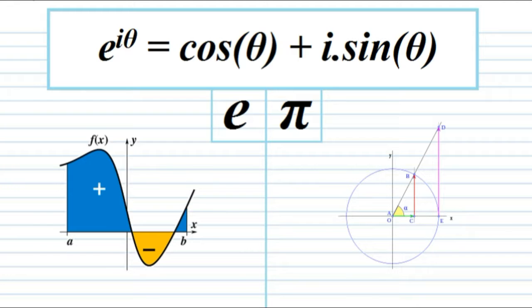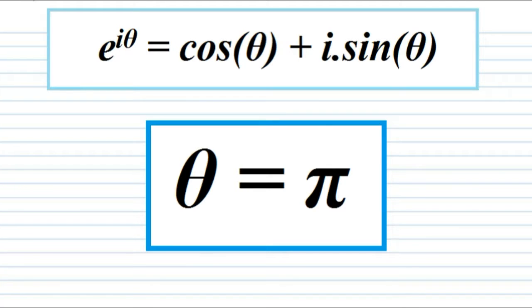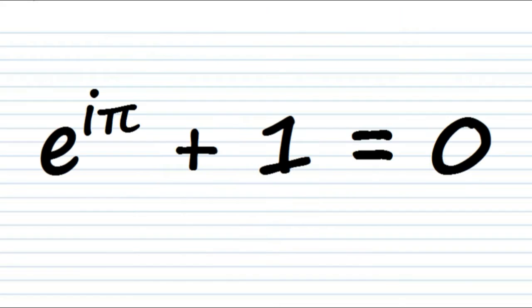He also made this observation. If in his formula, you consider the case when the angle θ has a value of π, then you obtain a new equation, known until today as Euler's identity, and considered universally among modern mathematicians as one of the most beautiful mathematical formulas, because it relates five of the most important numbers of mathematics: 0, 1, i, e, and π.